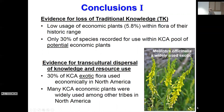Getting to the conclusions — what kind of evidence do we have for loss of traditional knowledge? We do the best we can. Low usage of economic plants within the flora of their historic range is certainly a contributing factor. Only 30% of the species recorded for use among potential plants are actually documented — it's most undoubtedly an underestimate. Obviously, transcultural dispersal of knowledge and resource use is very important. And 30% of the exotic flora is used economically, while many KCA plants were widely used among other tribes — there was obviously much communication.